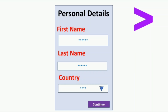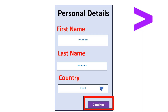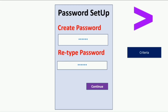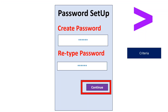Once your email address and code are verified, click on 'Continue'. You will be redirected to the personal details page where it asks for your first name, last name, and country. Enter these properly and click 'Continue'. You will then be redirected to the password setup page where you need to create a password. Check the criteria on the right-hand side for password length and allowed characters. Create your password, retype it to confirm, and click 'Continue'. Your registration is now complete.